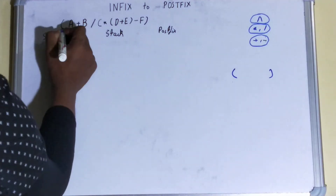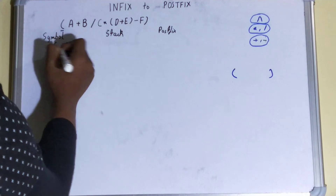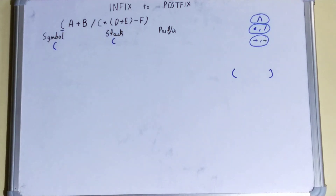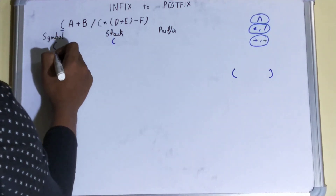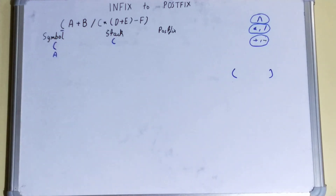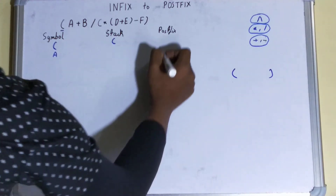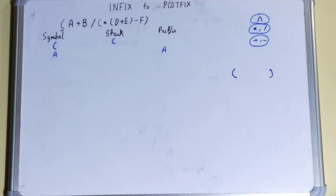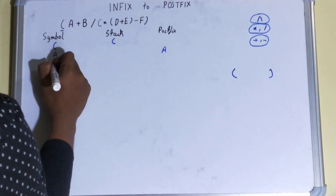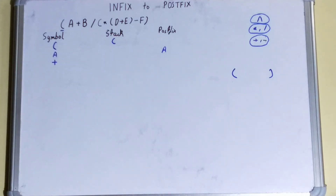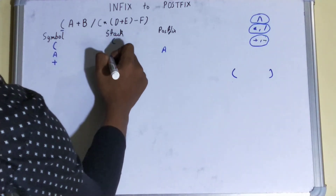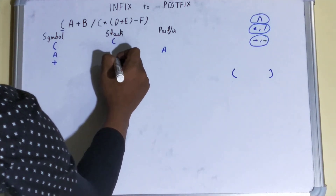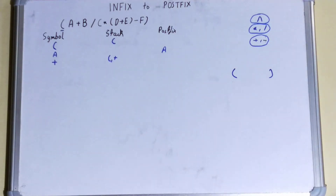So we start with the first element: an opening bracket. This operator stacks in. Next we get A, which is an operand, so we send it to the postfix column. After that comes plus, which is an operator, so we stack it after the opening bracket. No problem or confusion so far.